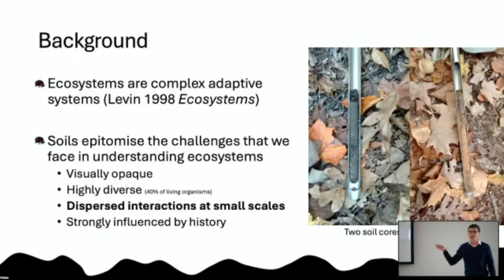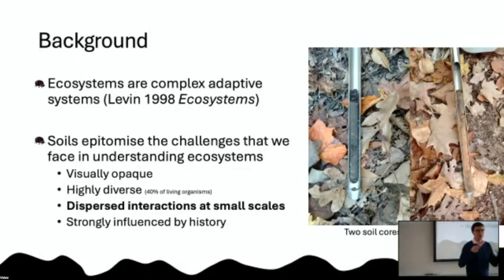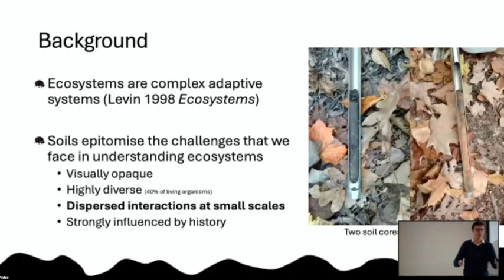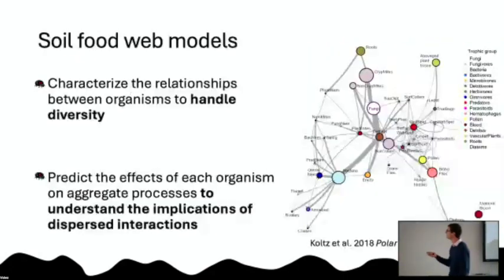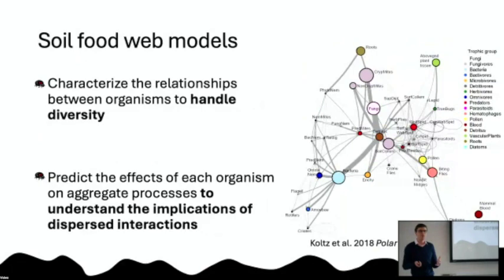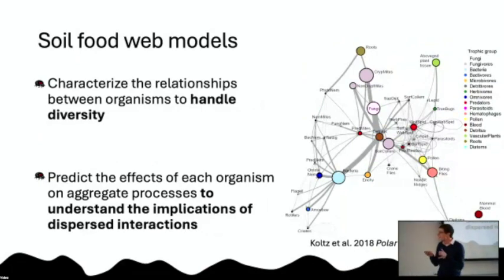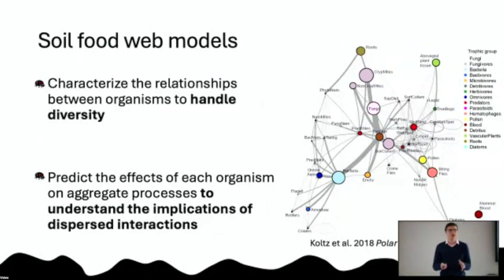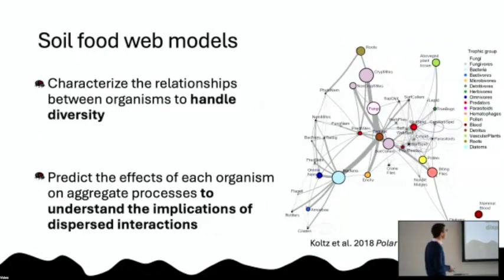I'm going to focus today on one approach: trying to understand how we can take these dispersed interactions and aggregate them together to understand the function of the whole system. We do this with something called soil food web models, which characterize these relationships and then predict the aggregated effects of organisms on soil food web function.